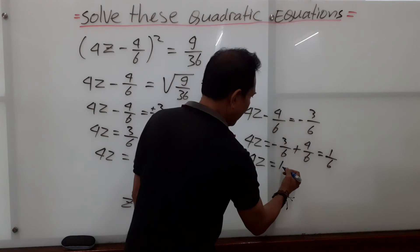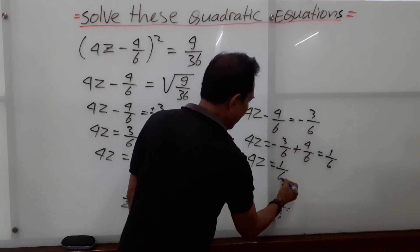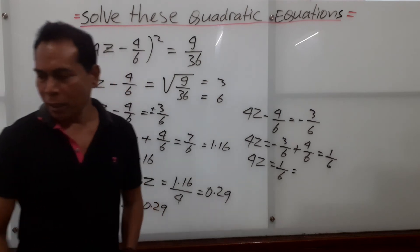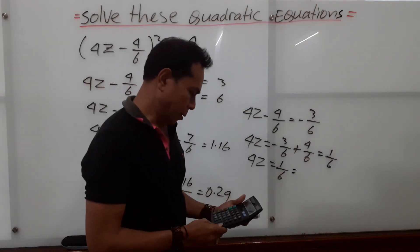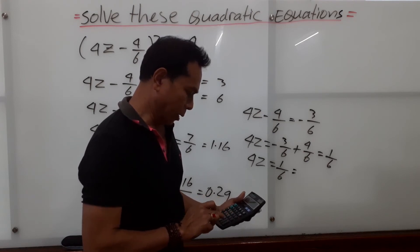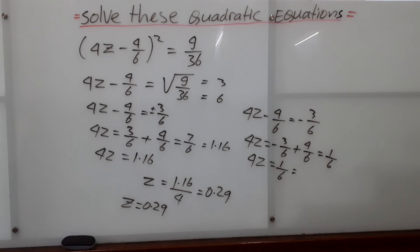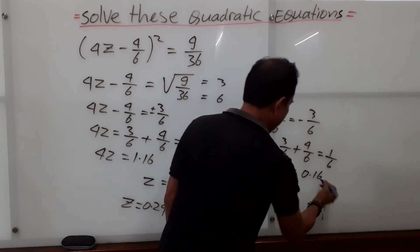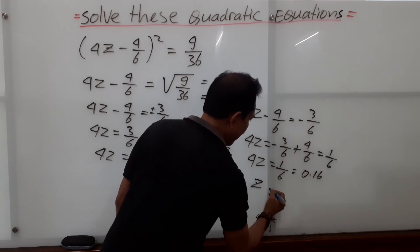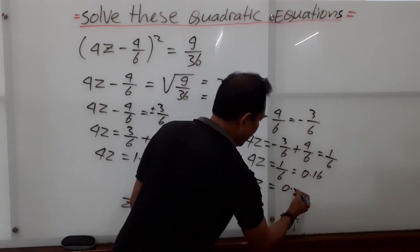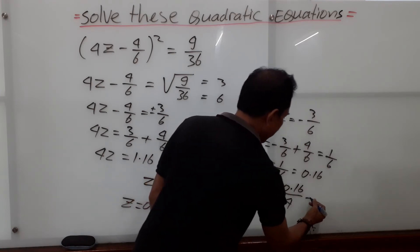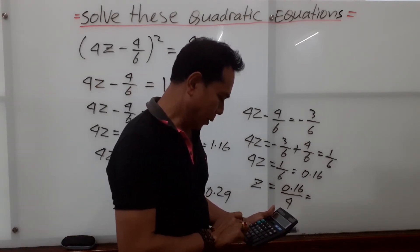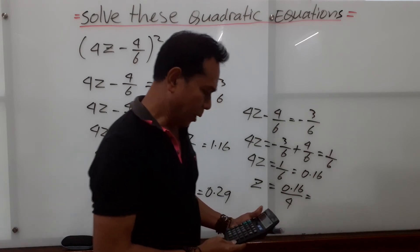So 4z equals 1 over 6, which is approximately 0.16. That means z equals 0.16 over 4. Let's use our calculator — 0.16 divided by 4 gives us 0.04.